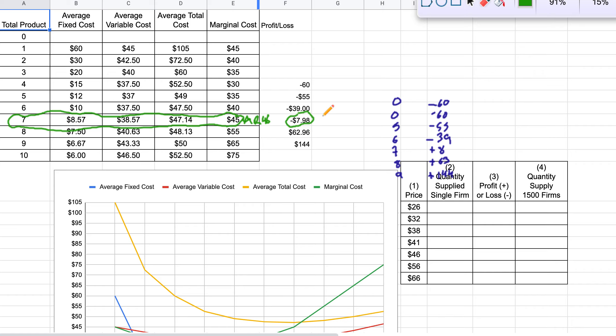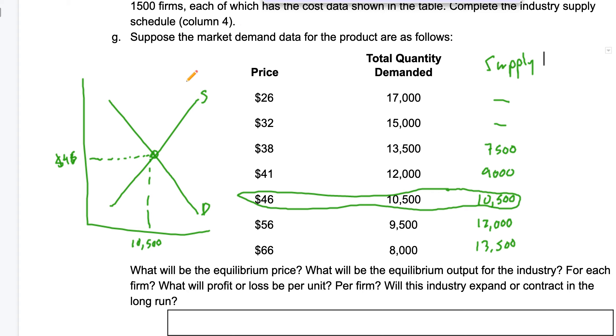So in the long run, back to our graph, our supply is going to decrease because people are losing money and people don't go into business to lose money.